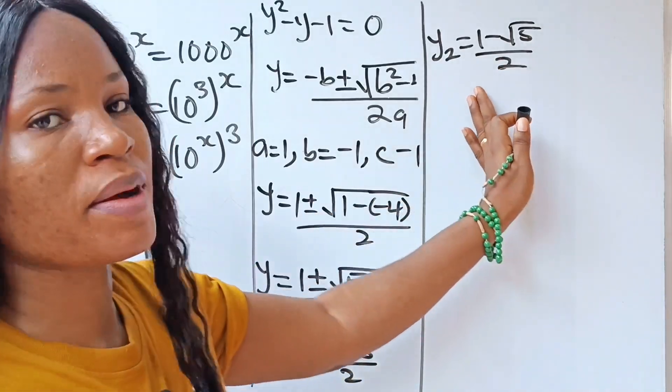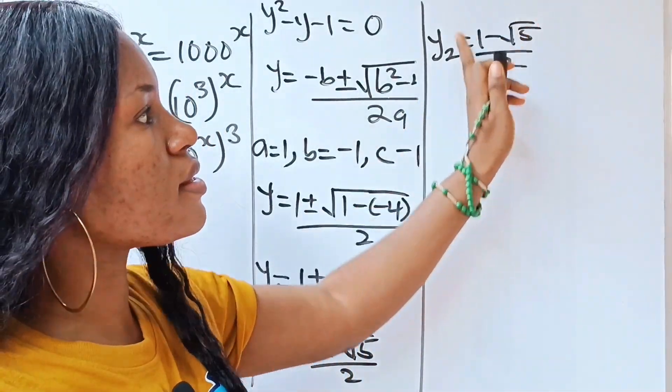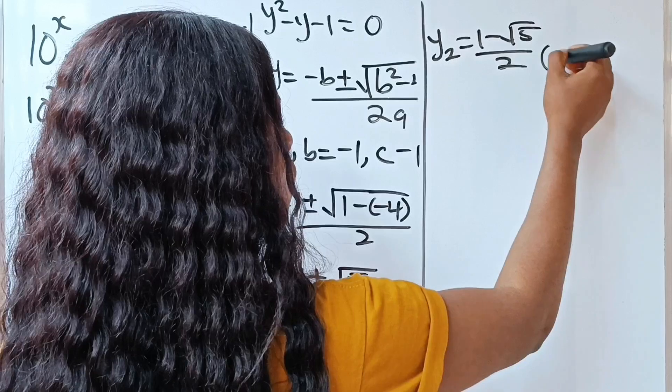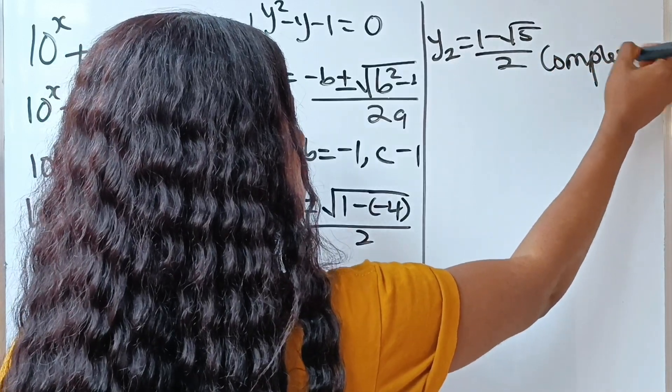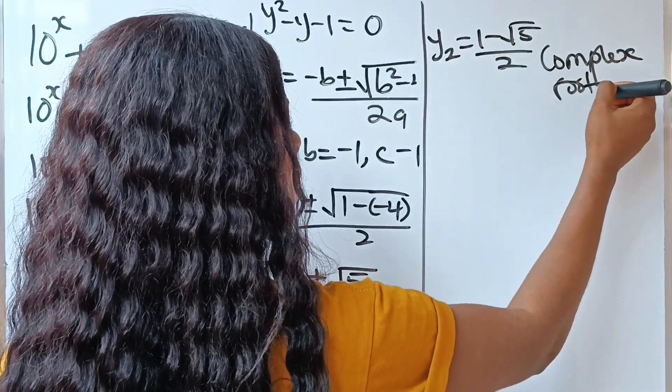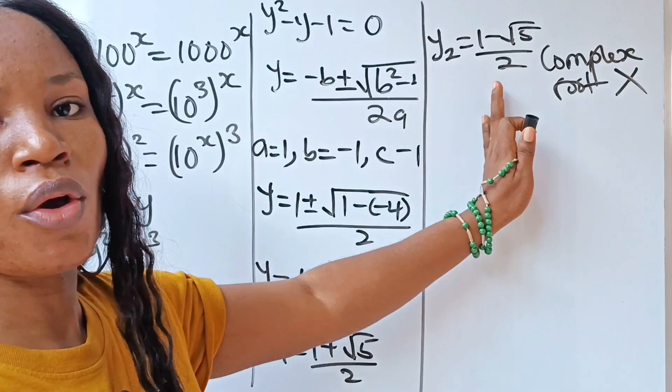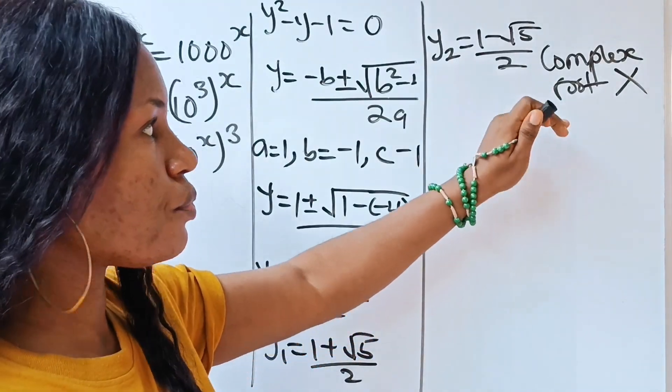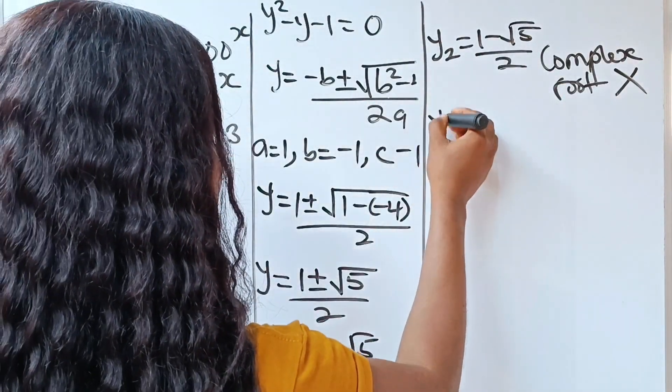Now for this particular side, we are going to get a negative number here, right? So this place is not going to give us a real root. It's going to give us complex root. Therefore, we are not going to use this. We are going to ignore this. Now we continue with this. That's y is equal to 1 plus root 5 over 2.